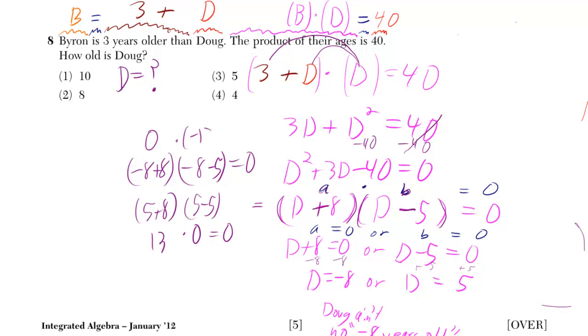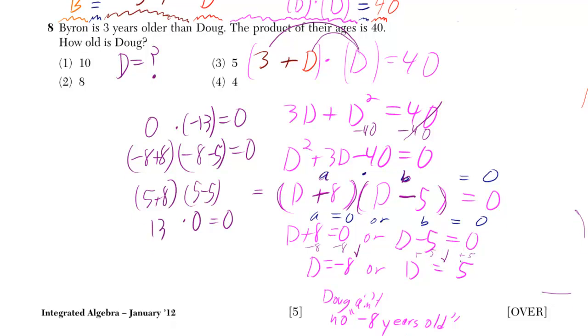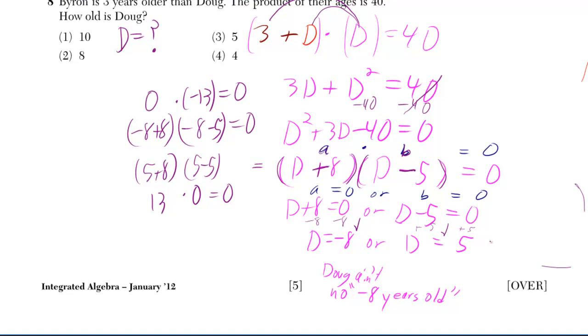And it doesn't even matter that this comes out to negative 13, because 0 times anything is 0. So that checks both of our answers, but Doug ain't no negative 8 years old.